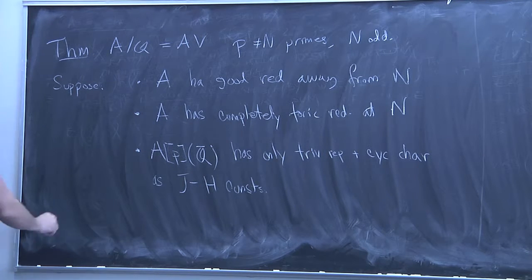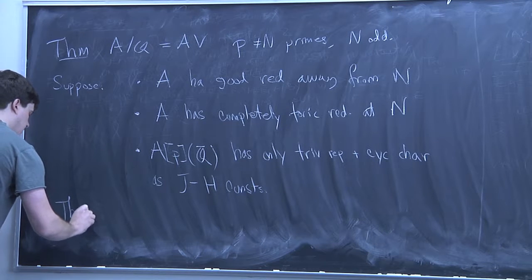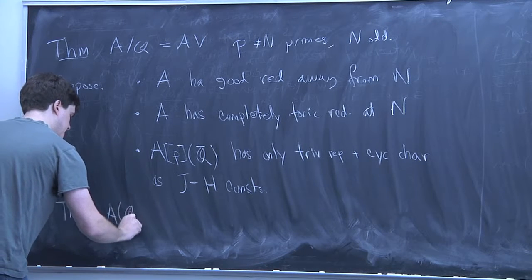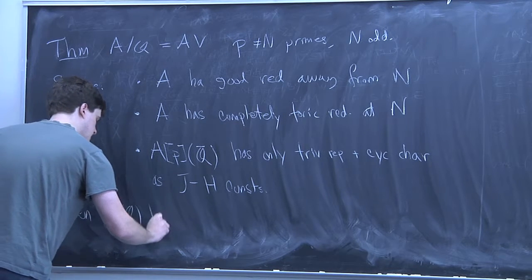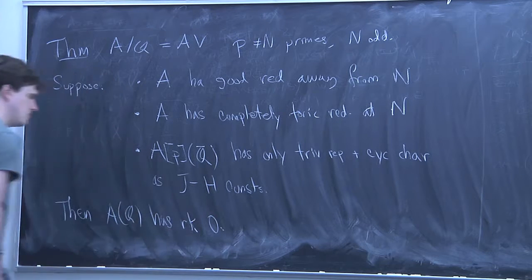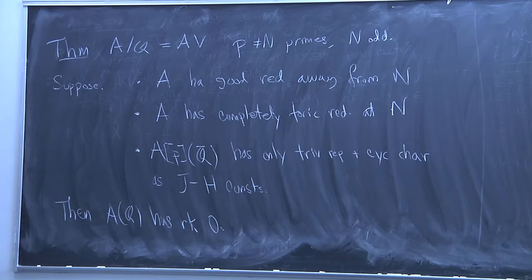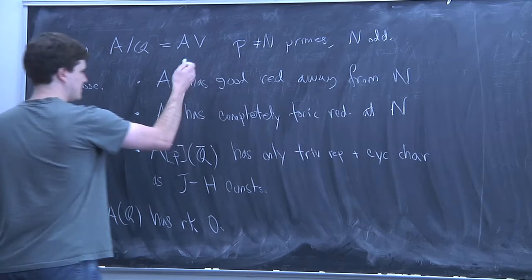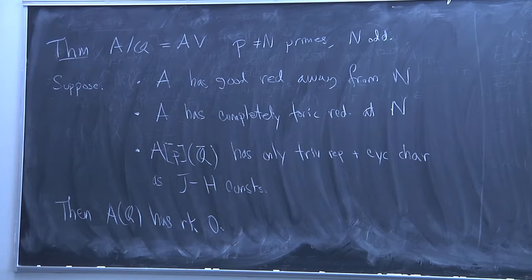So if all this holds, then A has rank zero. This is a nice statement — it's just about the abelian variety with some conditions. You don't see group schemes or anything like that.